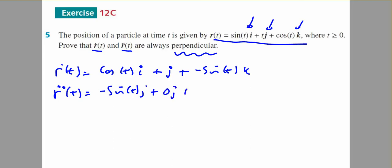So I'll be interested in r'(t) · r''(t). The dot product of these two vectors will be the i components multiplied, so minus cos(t)sin(t), plus the j components multiplied, which is zero, plus the k components multiplied, which is positive cos(t)sin(t).